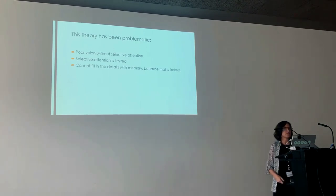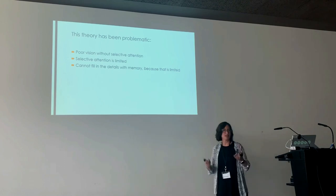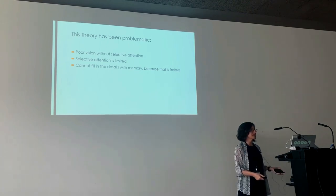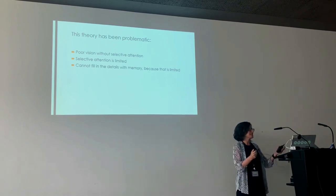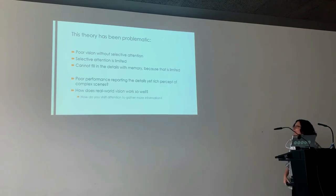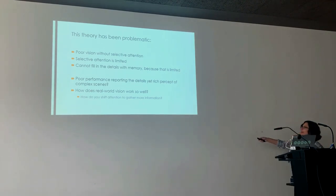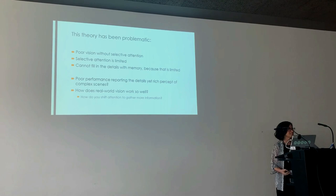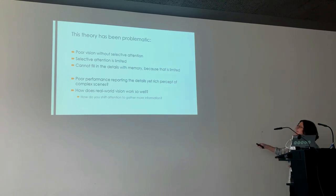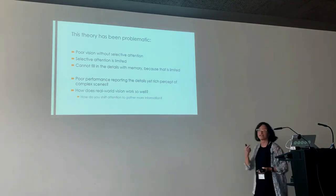This theory suggests you have poor vision without selective attention, selective attention is limited, and you can't fill in the details with memory because that is limited too. One problem is: how do you explain the rich percept of complex scenes? How do you do so well with scene tasks? And more importantly, how does real-world vision work so well if this is what's going on? If your vision before attention is so poor, how are you directing attention to get more details about different objects?